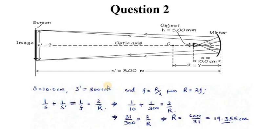We want to solve this quickly. I'll begin by finding R. We have to remember how R is related to F so we can use this general mirror formula. We are given S to be 10 centimeters and S prime to be 300 centimeters or 3.0 meters.